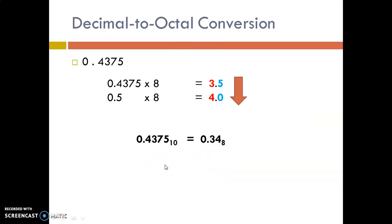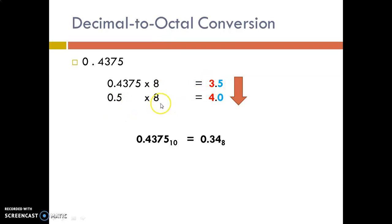Now we will see how to convert the fractional part. Taking the fractional part separately, it is again accomplished by successive multiplication method. Since the radix is 8, multiply the fraction with 8, which equals 3.5. Neglect the integer; take only 0.5 and multiply it with 8, which equals 4.0. We cannot proceed further, so we stop here and move in the downward direction. So 0.34 is the octal equivalent of the decimal number.